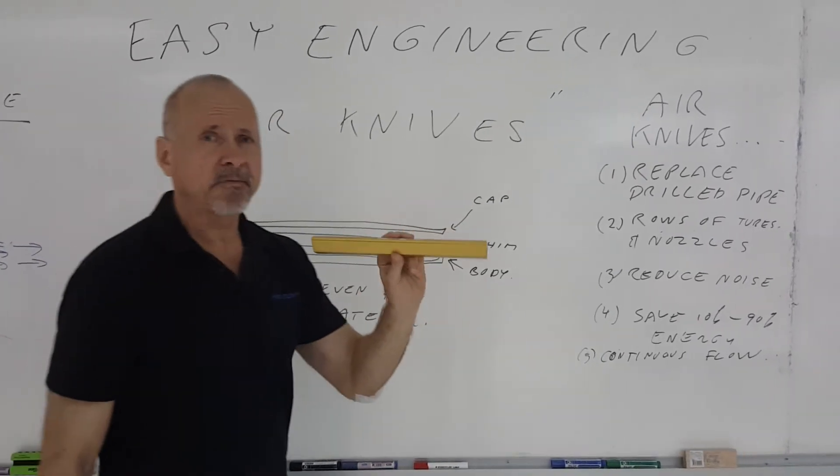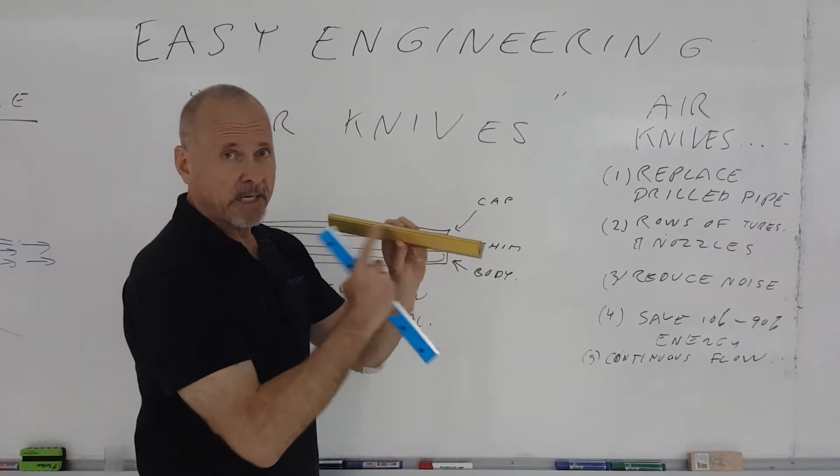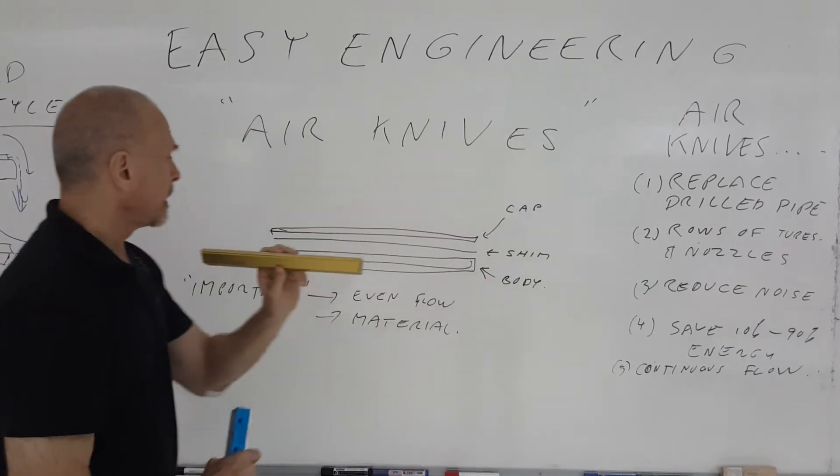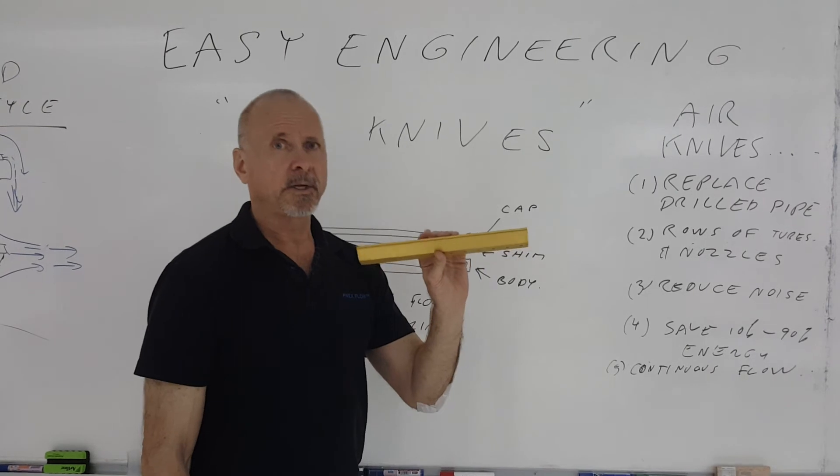So an aluminum air knife that's anodized is much better. But check for that even flow. It should have even flow all along its length. So material is important and even flow is important when you're considering an air knife.